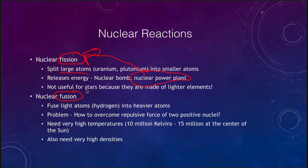However, this is not useful for stars because stars are not made up of uranium and plutonium. They are made of lighter elements, hydrogen and helium. Remember that most all of the composition of the sun and the stars is hydrogen and helium. So this is what we use on Earth.